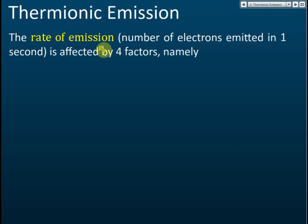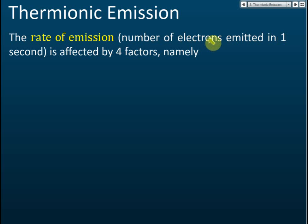The rate of emission — rate means how fast something occurs — so rate of emission means how fast the emissions occur, or how many electrons are emitted in one second. If it's very fast, a lot of electrons are emitted; if it's very slow, just a few electrons are emitted.